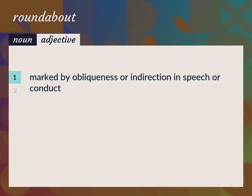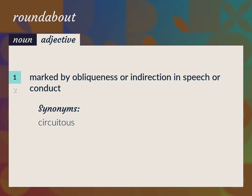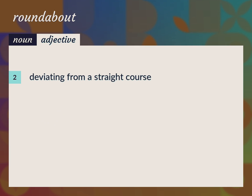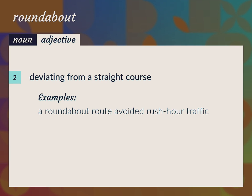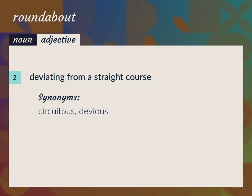Marked by obliqueness or indirection in speech or conduct — a roundabout paragraph. Circuitous. Deviating from a straight course — a roundabout route avoided rush hour traffic. Circuitous, devious.